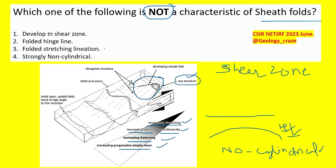Now our first option is develop in shear zone - yes, it is developing in shear zone. Folded hinge line - yes, folded hinge line. Folded stretching lineation - no, these are stretching lineations and these are not folded.